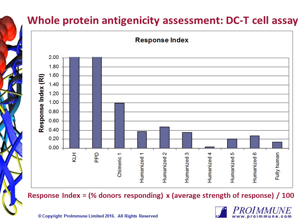This platform has a wide dynamic range in that it not only takes into account the T-cell proliferative responses to whole protein, but the antigen processing and presentation by the dendritic cells as well. In this example, the response index is shown on the Y-axis, with the X-axis representing the various test proteins. The KLH and PPD controls are featured on the left, followed by a chimeric version of the antibody, six humanized versions, and a fully human version. The response index for the humanized IV and fully human antibodies were much lower than the other variants, suggesting that comparatively, the other antibodies may be at a greater risk for causing unwanted immune responses based on the presence of more and/or stronger T-cell epitopes.